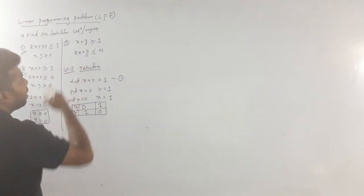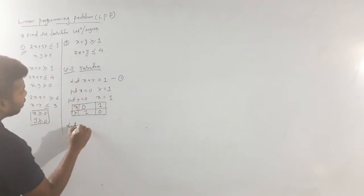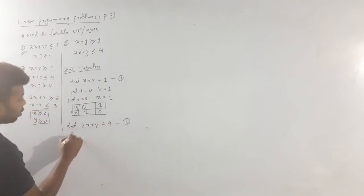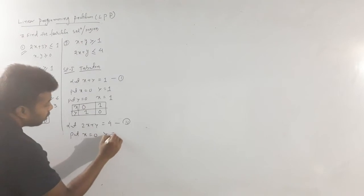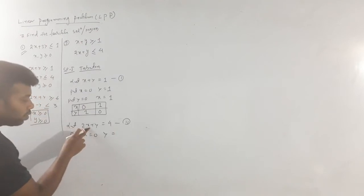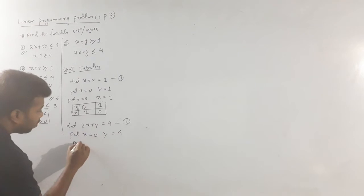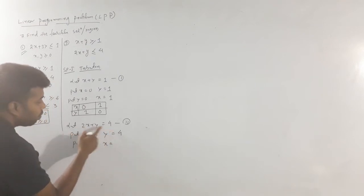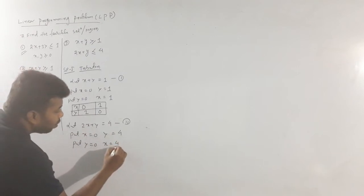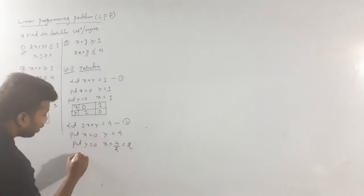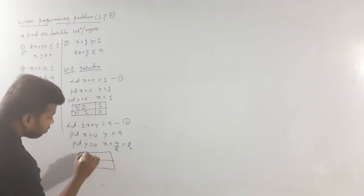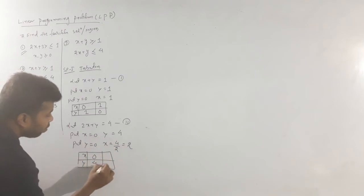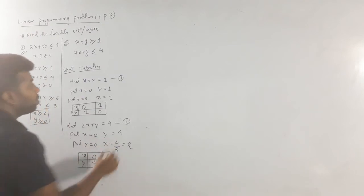For Equation 2: 2x + y = 4. Put x = 0: 2×0 + y = 4, so y = 4. Put y = 0: 2x = 4, so x = 4/2 = 2. The table for Equation 2 gives points (0, 4) and (2, 0). Tabulation is complete.